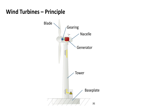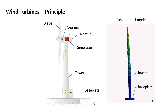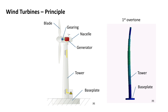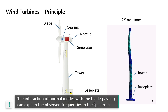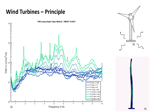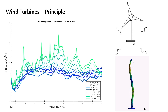To find the origin of the oscillation frequencies, a model calculation of a tower was set up. Using the elastic properties of the material, the natural frequencies were calculated. They are shown here in color-coded deformation. The fundamental mode shows the largest movements at the top of the tower with one oscillation node at the bottom. Higher modes have multiple maxima and nodes — for example, the first overtone and the second overtone. The interaction of those normal modes with the blade passing can explain the observed frequencies or spectral lines in the spectrum. However, a clear distinction between both effects, together with their propagation behavior, will be the object of future analyses.